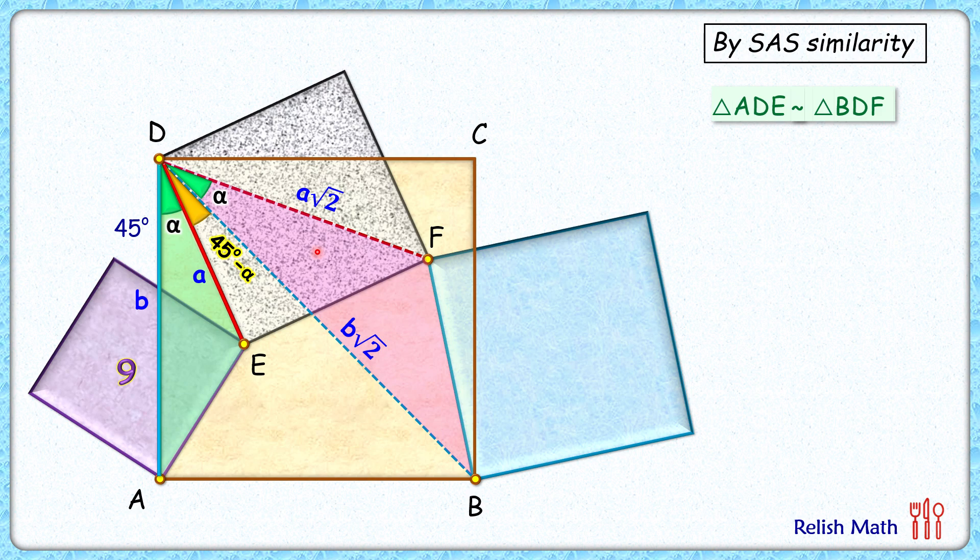Since the triangles are similar, the ratio of corresponding sides will be equal. That is, AE/BF equals the ratio of any other corresponding sides. Here, let's take it as AD/BD.